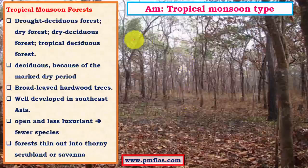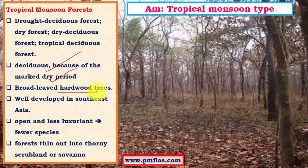Coming to vegetation, we have tropical monsoon forests of dry deciduous trees. This is because of a distinct and very long dry season. Deciduous trees shed their leaves during summers and winters to prevent excess moisture loss through evapotranspiration. The trees are broad-leaved hardwood trees. In the tropics we mostly have hardwood trees, not softwood. These forests are well developed in Southeast Asian countries like Vietnam, Cambodia, southern China, and Myanmar. They are not luxuriant like rainforests — quite open — and thin out towards savannah where rainfall decreases.